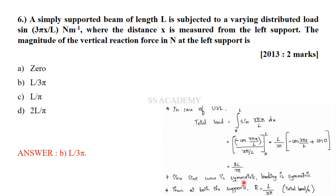Since it is a sine curve, it is symmetric — sin(3πx/L) produces three half-cycles over L, symmetric about the midspan. The loading is symmetric, so both supports carry equal reactions. The reaction at the left support = (2L/3π) / 2 = L/3π. The answer is B: L/3π.